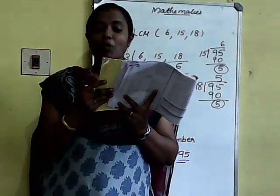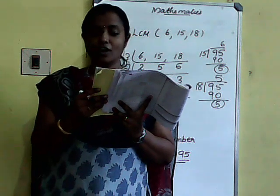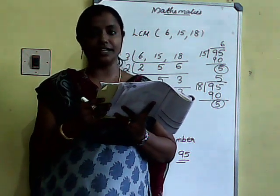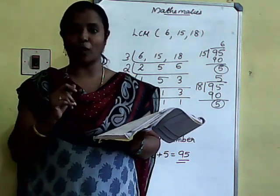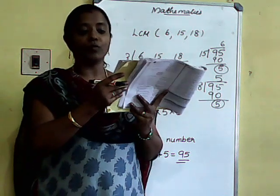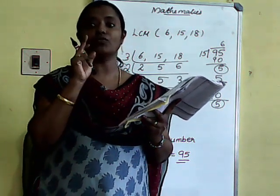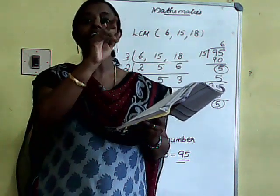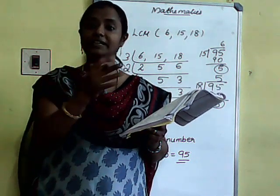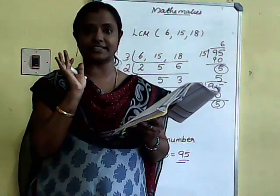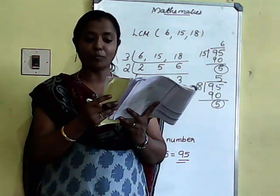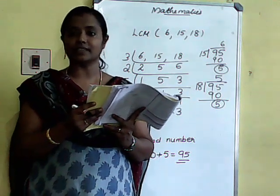9th question: Find the smallest four-digit number which is divisible by 18, 24, and 32. That is your worksheet problem. We discussed this in previous modules. First find the LCM, then find their multiples and identify the smallest four-digit number. Please mark it — Problem number 9, Exercise 3.7.